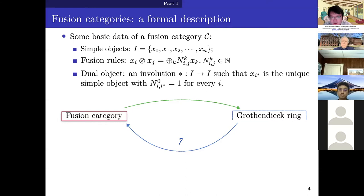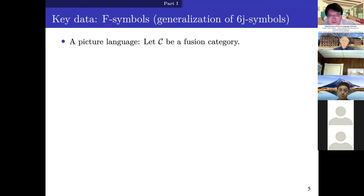The Grothendieck ring only carries the basic data of a fusion category, so it is much easier to look for new examples of fusion rings. An interesting and natural question is: can you go backwards? This procedure would be called categorification of a fusion ring. You need to ask yourself: what are the missing data when you pass from a fusion category to its Grothendieck ring? The answer is exactly the F-symbols.